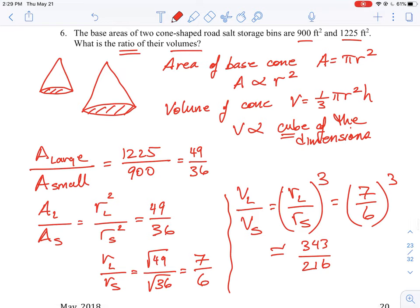We can say that it is equal to the radius of the large over the radius of the small. But remember, we don't know what the exact number is, but we know it varies by the cube of those dimensions.